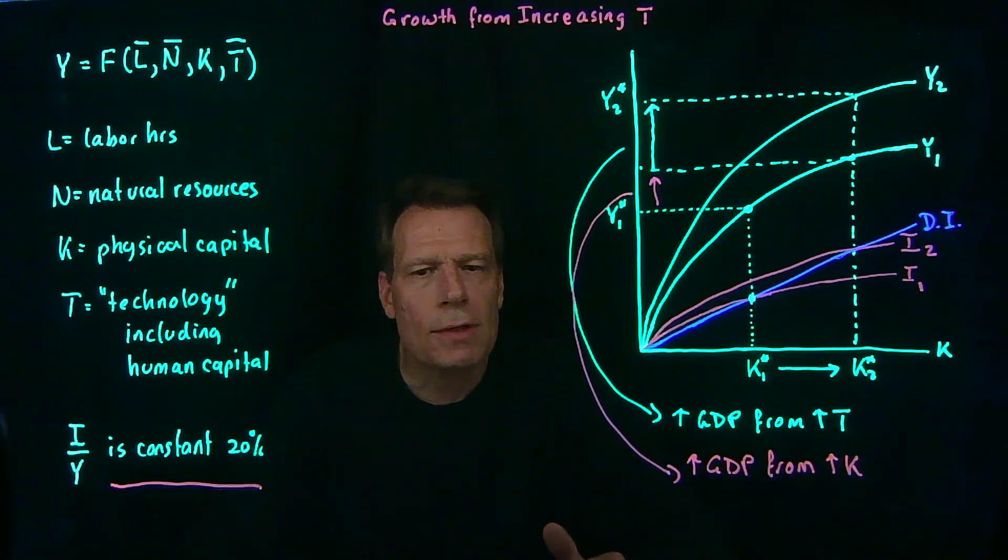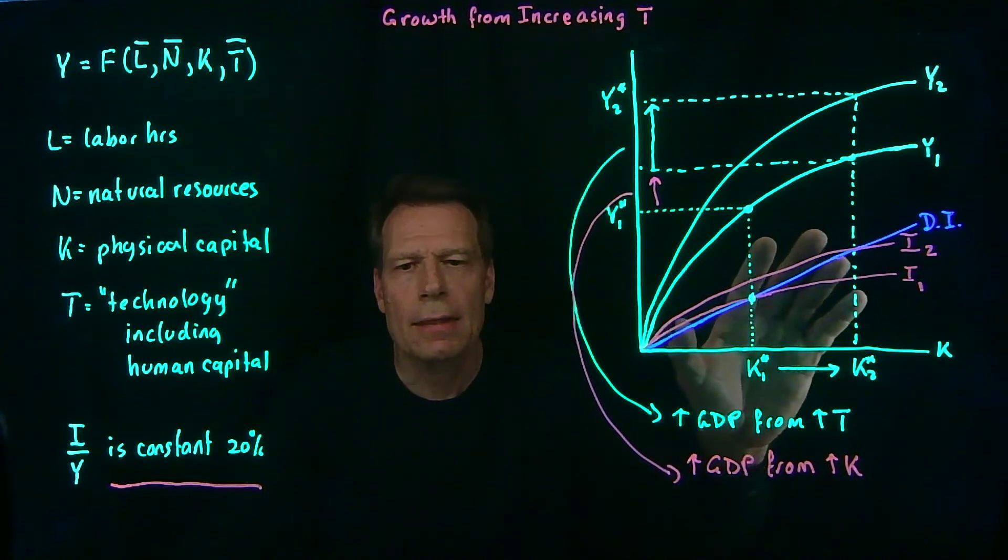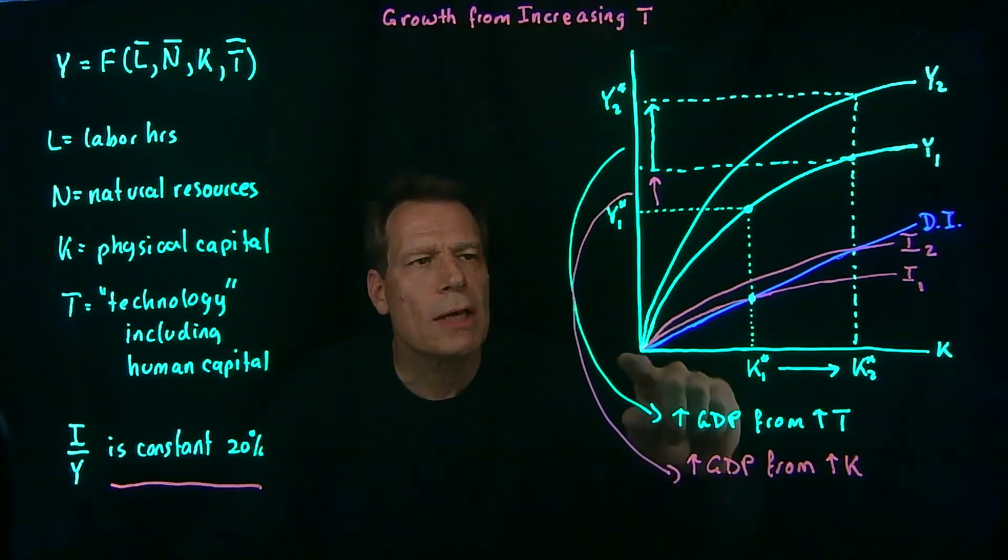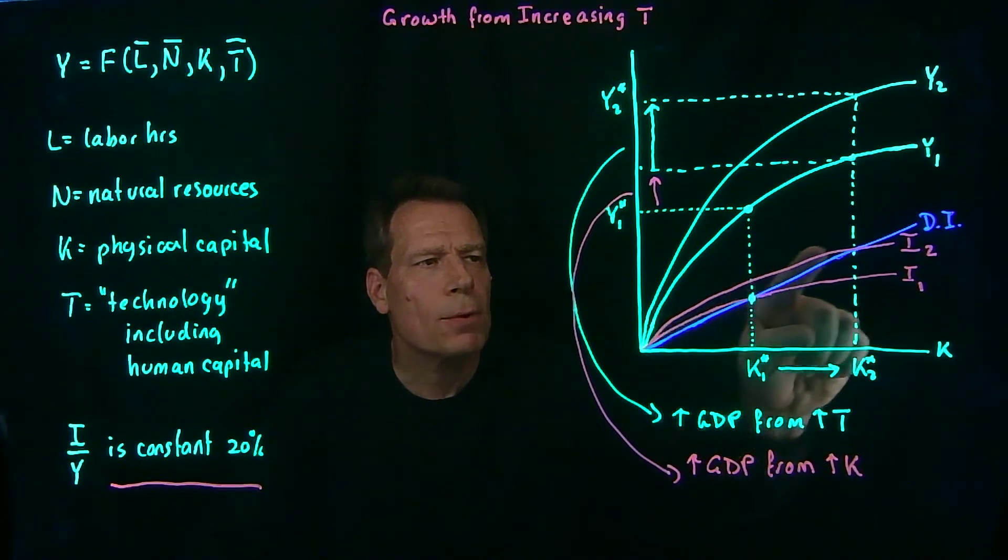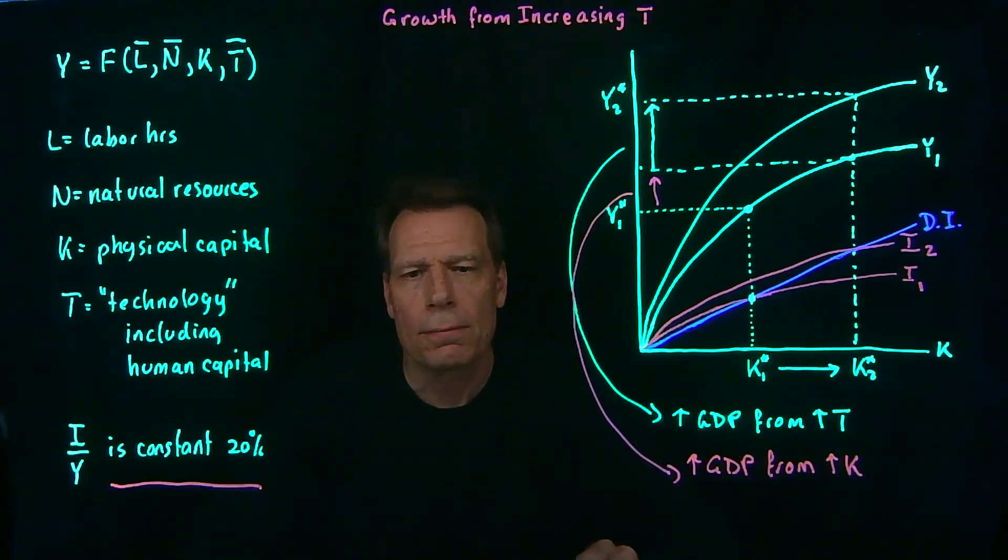Now, if instead of an increase in technology, we had an increase in the labor hours through immigration or increased fertility, we would actually see exactly the same picture. We would see an upward rotation of the GDP curve, and that would give rise to an upward rotation of the investment curve. So we'd get exactly the same picture.